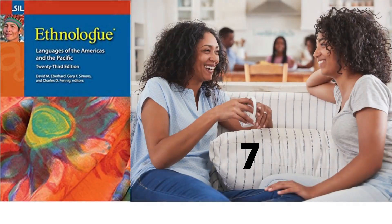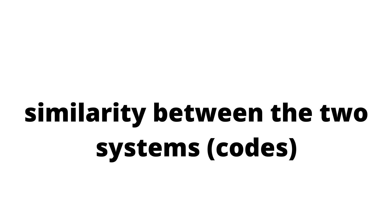The Ethnologue, the de facto standard for information about languages, has a rule that if two people understand 70% or more of what they are saying based on the similarity between their utterances, then they are speaking two dialects of the same language. Note that this has to do with the intrinsic similarity between the two systems.